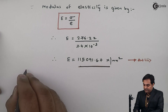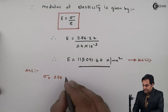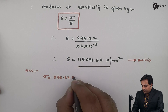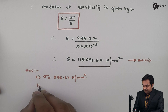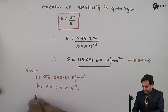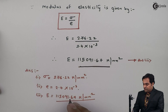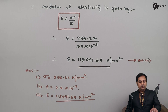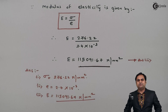To summarize the answers: stress is 276.22 Newton per mm square; strain is 2.4 into 10 raised to minus 3; and Young's modulus of elasticity is 115091.67 Newton per mm square. With that, we have completed the problem and calculated all the unknown values.